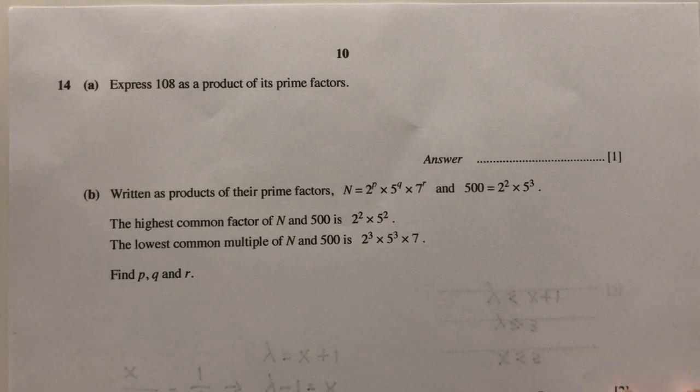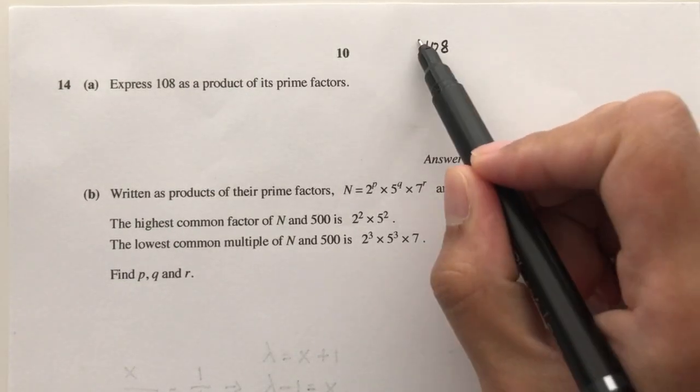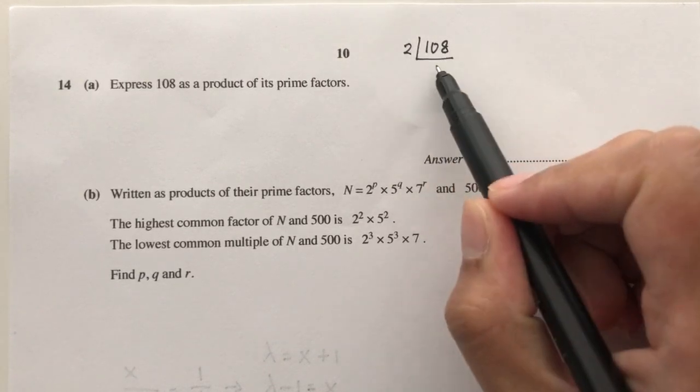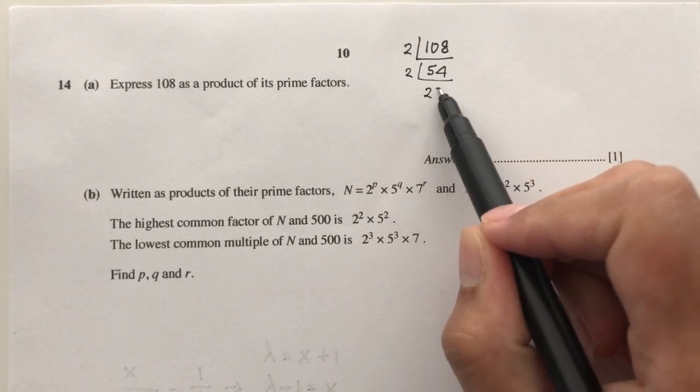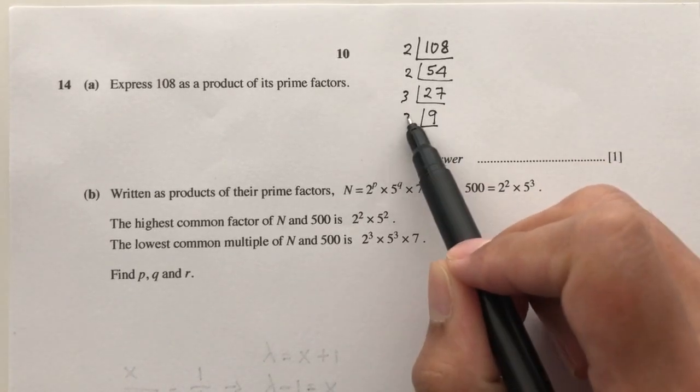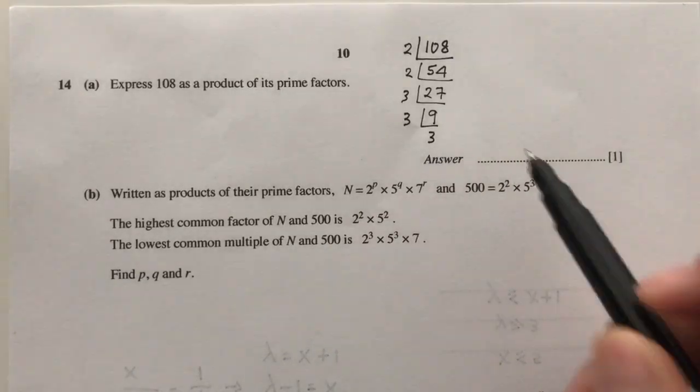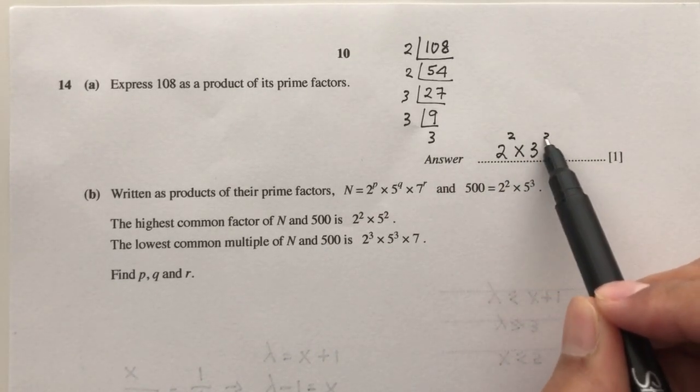This one is pretty easy. We just have to find the prime factors, right? So 108, as you can see, is an even number. We can divide by 2 to begin. That will be 54, divided by 2 again, now I'll be 27, divided by 3, that should be 9, and 3, 3. So your prime factors is 2 power 2 times 3 power 3.